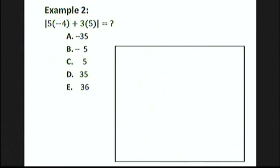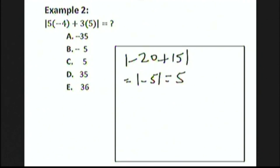Let's look at a simple example: the absolute value of 5 times negative 4, plus 3 times 5. This can all be done on the calculator, but it's also pretty simple by hand. 5 times negative 4 is negative 20, and 3 times 5 is 15. So we have the absolute value of negative 20 plus 15, which is the absolute value of negative 5, which becomes positive 5. That's choice C.